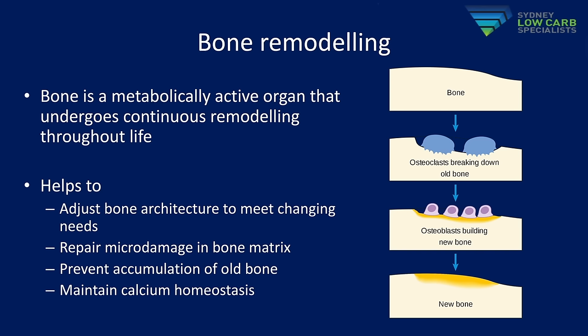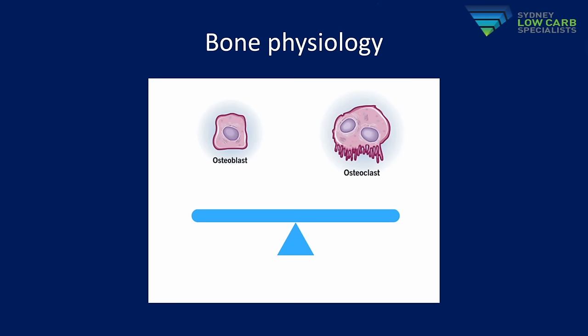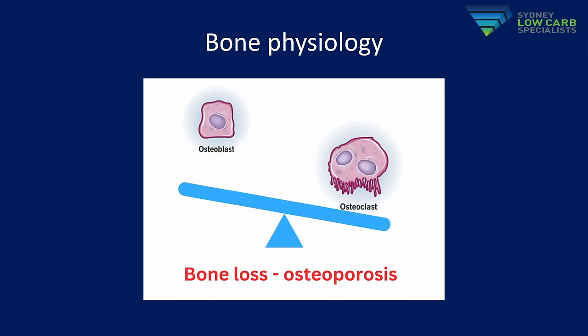Most people think bones are static organs, but they're actually very metabolically active — not unlike fat cells. Our bones are constantly being broken down and remade primarily through two types of cells: osteoclasts break down old bone and create space for osteoblasts to lay down new healthy bone. This remodelling process helps bones adjust to changing needs — weight changes, growth spurts — and repairs small damage in the bone matrix while maintaining tight calcium levels in the blood. If we break down more bone than we lay down, we run into problems with low bone density.